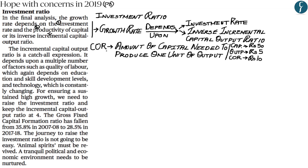Capital output ratio is the amount of capital needed to produce one unit of output. For example, if you invest rupees 50 and produce an output worth rupees 5, then 10 rupees of capital is required to produce one unit of output — that is a capital output ratio of 10. This capital investment includes both permanent investment, like equipment lasting 10-15 years, and temporary investment such as electricity and workers' payments.